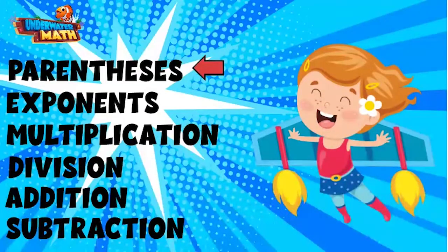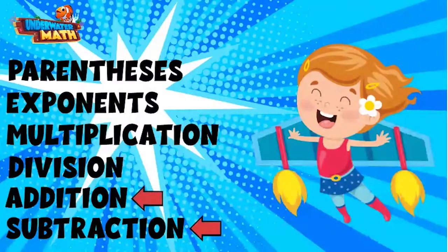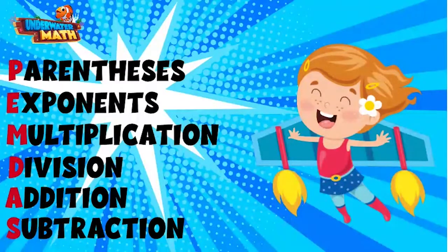First is parentheses. Next is exponents. Then we have multiplication and division, which happen at the same time from left to right. Finally, we have addition and subtraction, which also happen at the same time from left to right. We use a handy acronym to help us remember this order called PEMDAS, by taking the first letter of each word in the order of operations.